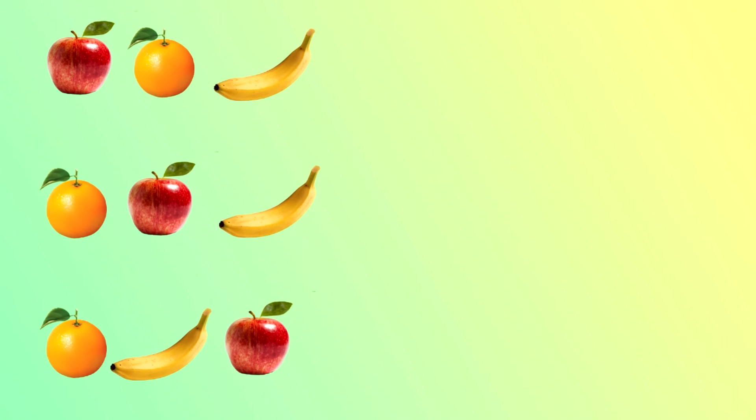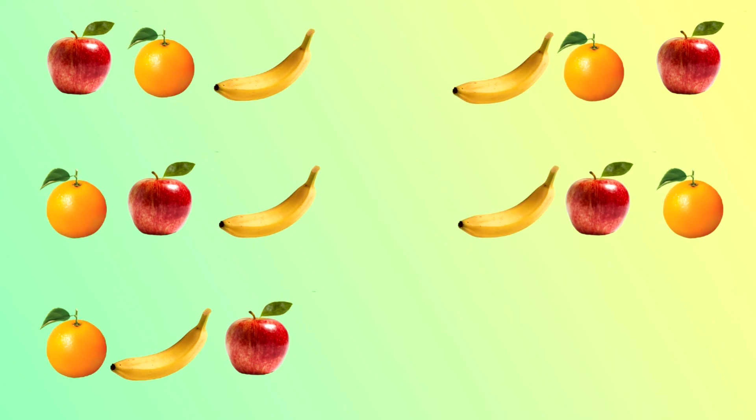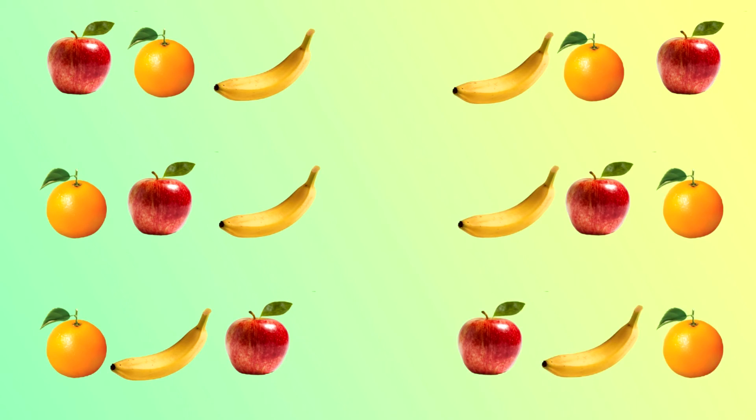Now, take a banana with them. So now we have three fruits: apple, orange, and banana. Let's see how we can arrange these three fruits in different ways. First: apple, orange, banana. Second: orange, apple, banana. Third: orange, banana, apple. Fourth: banana, orange, apple. Fifth: banana, apple, orange. Sixth: apple, banana, orange. So there are six different types of arrangement.